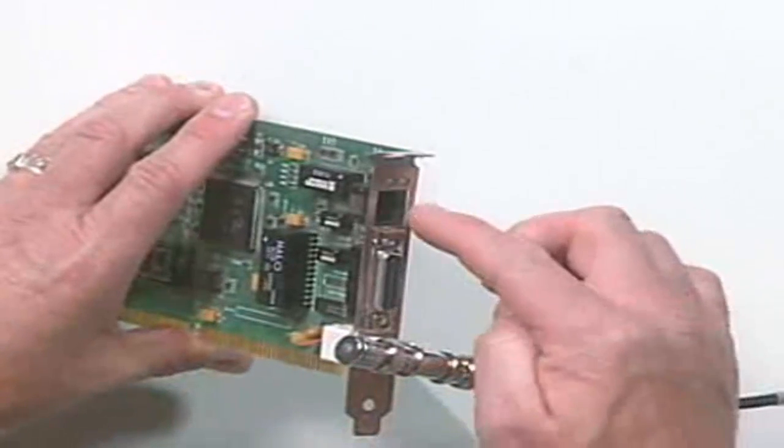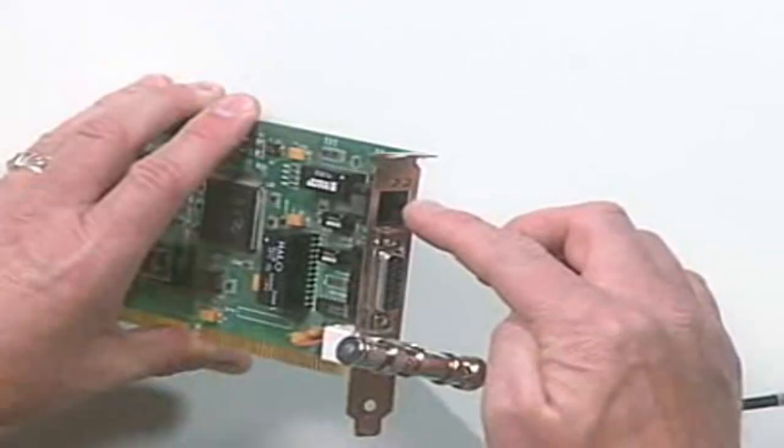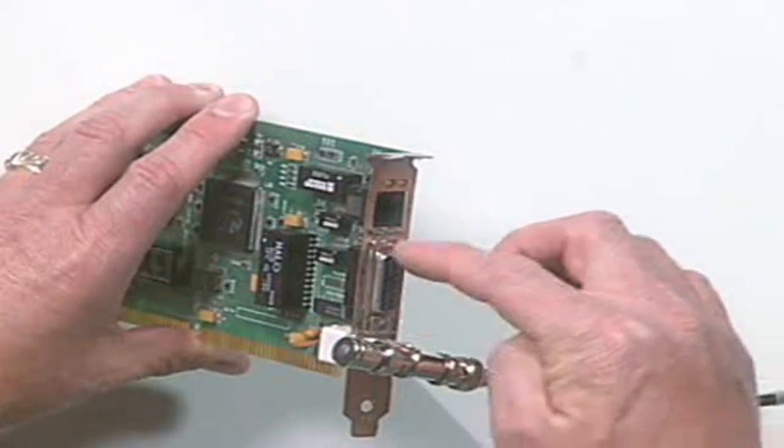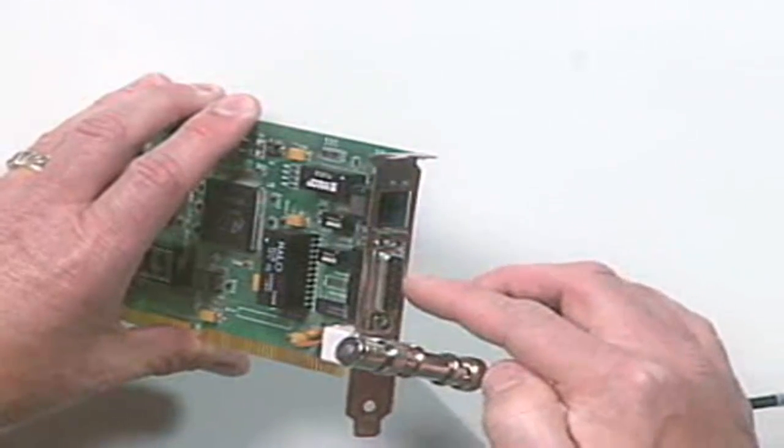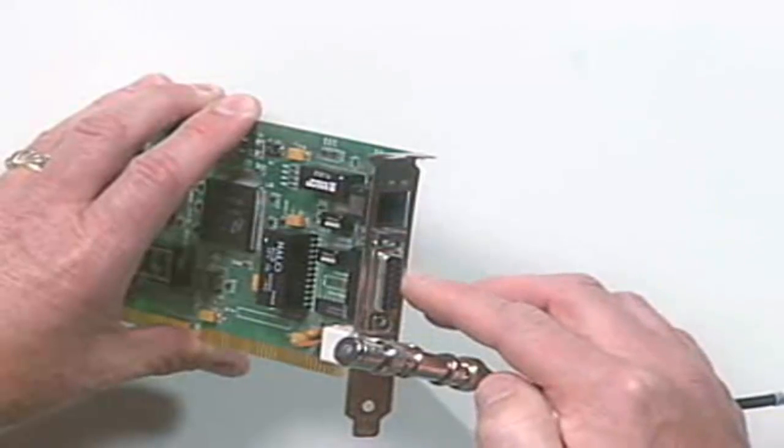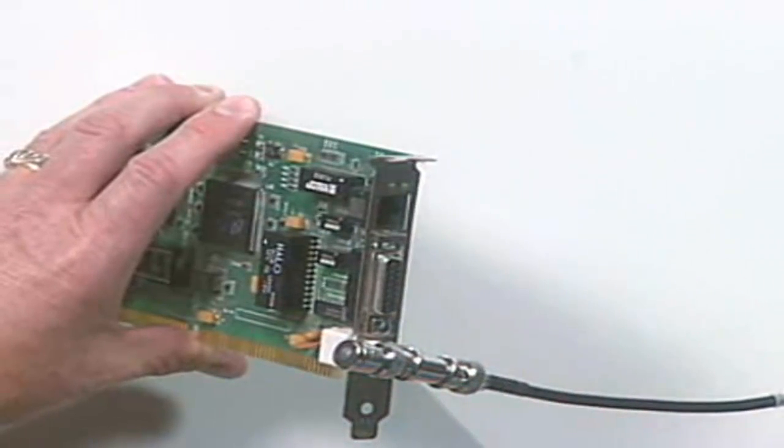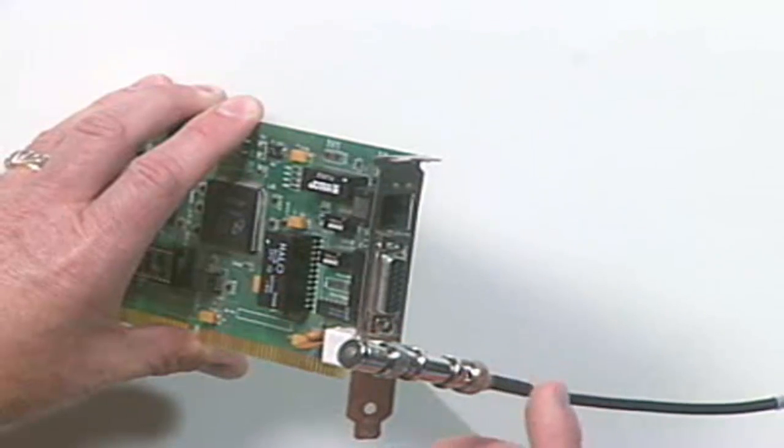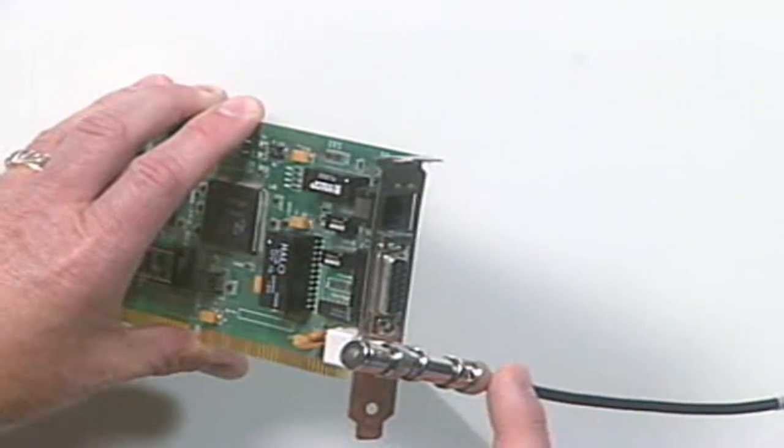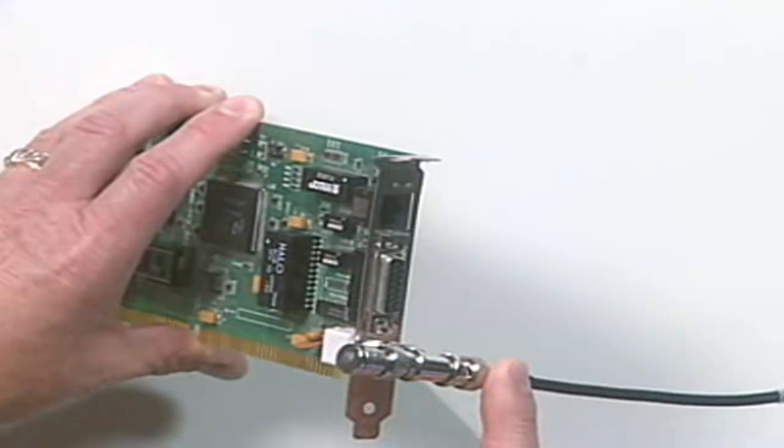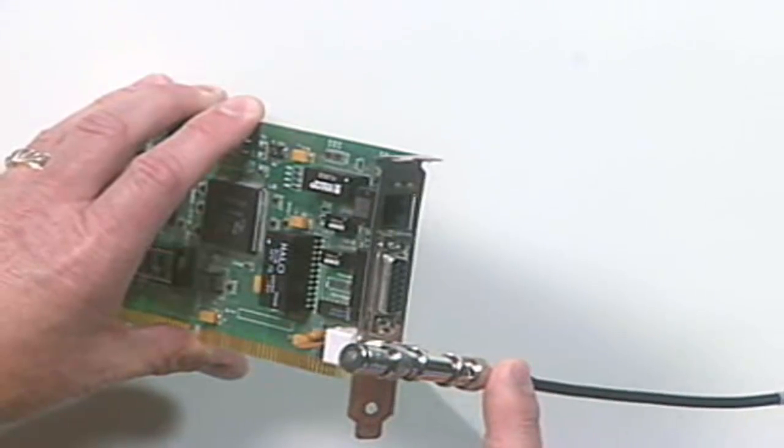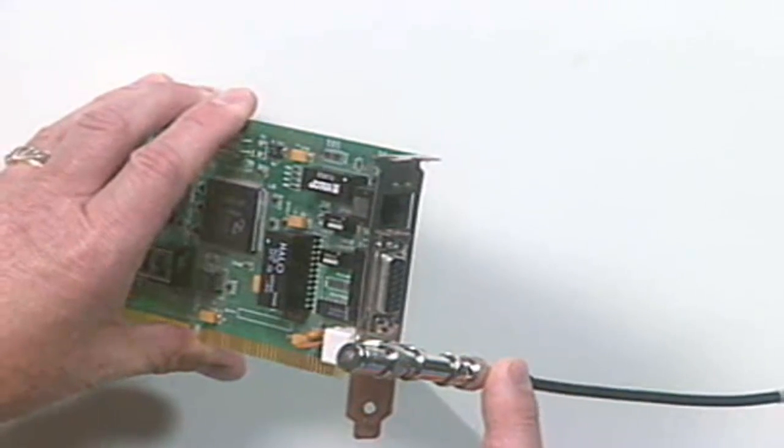Now, the next connector we want to look at is this 10-base-T connector. We're actually not going to talk about 10-base-5. It wasn't all that widely implemented when it was, and it's pretty much dead and gone now. Folks sometimes say 10-base-2 is pretty much dead and gone, and that's true. You probably won't see any new implementations of 10-base-2. However, it was very, very widely implemented in its day, and so there's still a fair chance you're going to run into it.